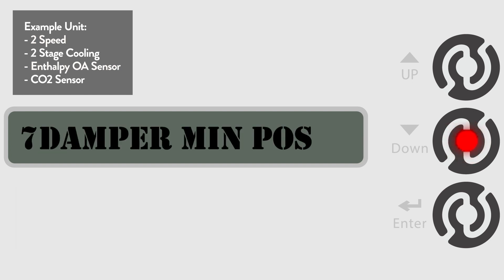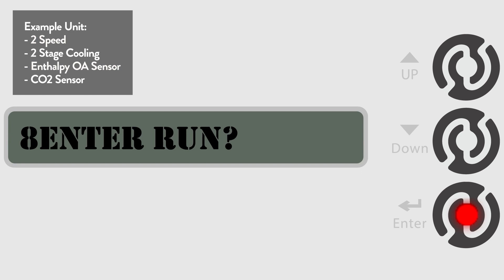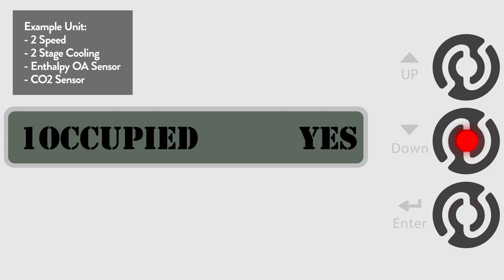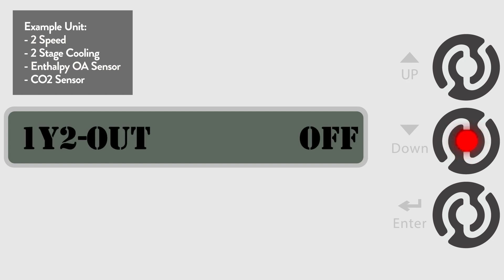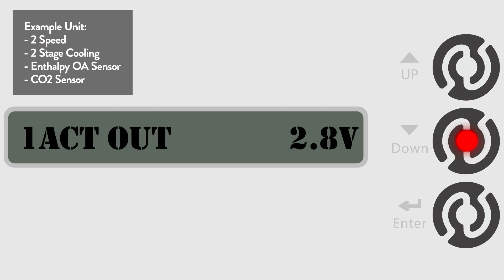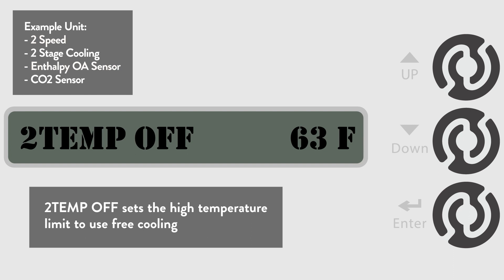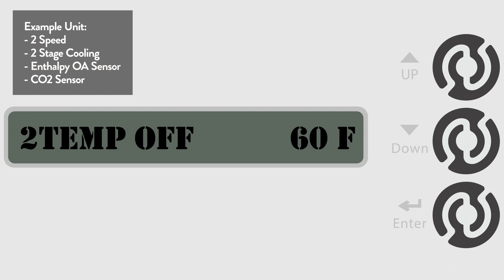Now we are going to go on to the controller's 8 run state menu. We are using temperature and humidity for the outside air sensor, so first let's go to the 2TEMP off menu. This sets the high temperature limit where the economizer free cooling is locked out. The default is 63 degrees, but let's change it to 60 degrees for this example. In the 5 configuration state menu, we selected the temperature and humidity or enthalpy outside air sensor, so now we will adjust the humidity setpoint.